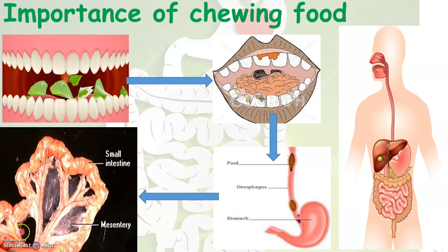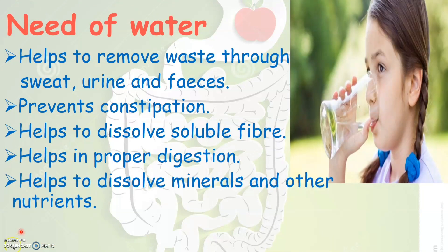Now let us see what is the need of water in our daily life. Do you remember what we studied in chapter 1 about the importance of drinking water? We learned that we need to drink at least 6 to 8 glasses of water every day, because this will help to remove waste from our body. It will also help to dissolve, absorb and digest the food that we eat. Drinking a lot of water will help to remove waste from our body through sweat, urine and feces.